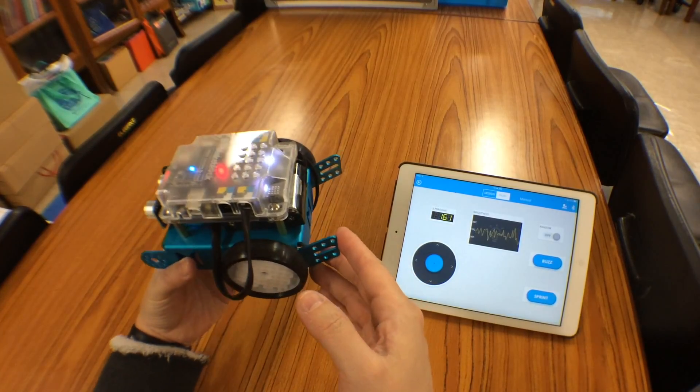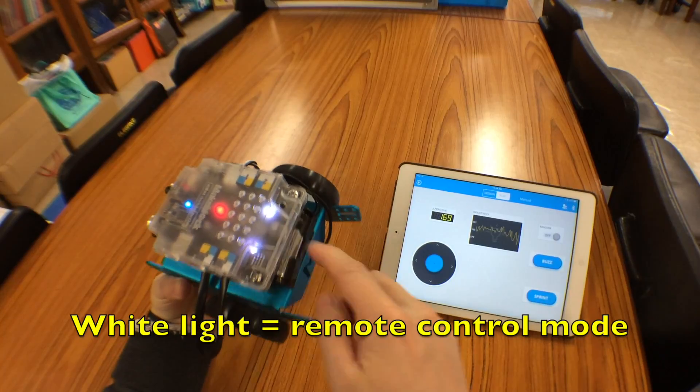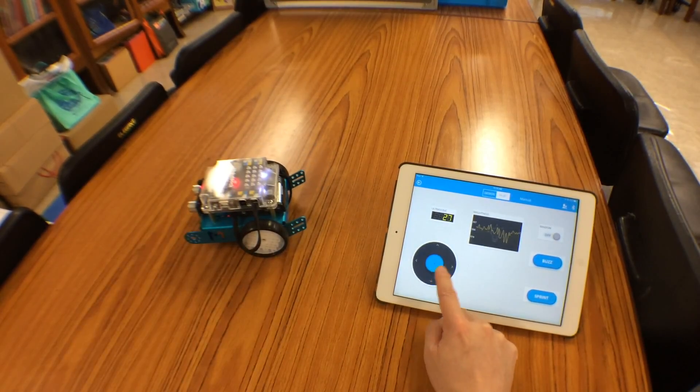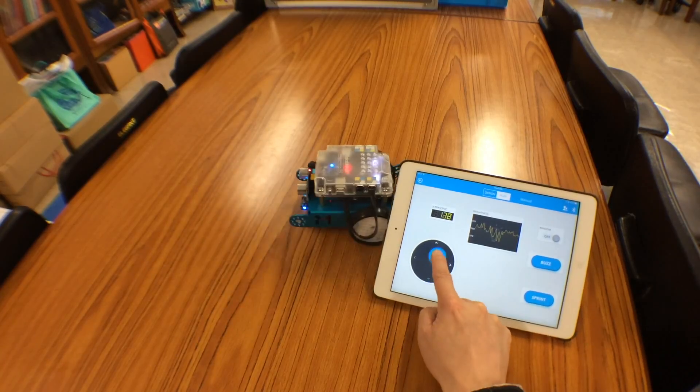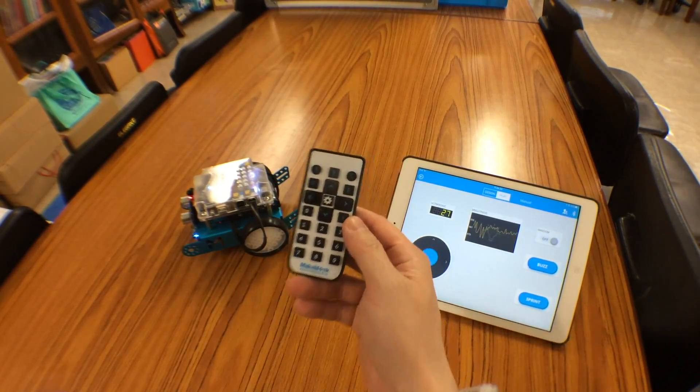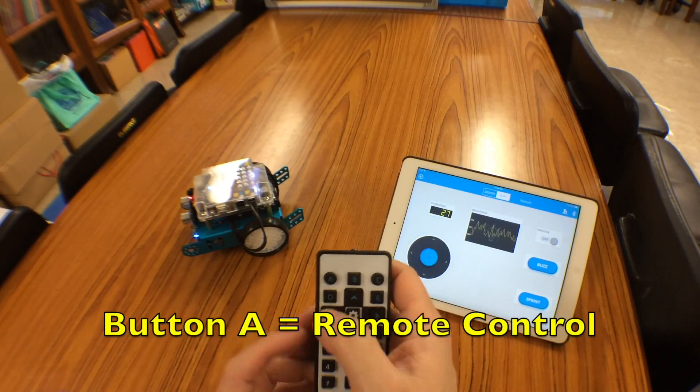There are actually three operating modes. When the white light is turned on, that means it is in remote control mode. You can remote control it using the iPad or using the default remote controller, but this is the same as the A button.